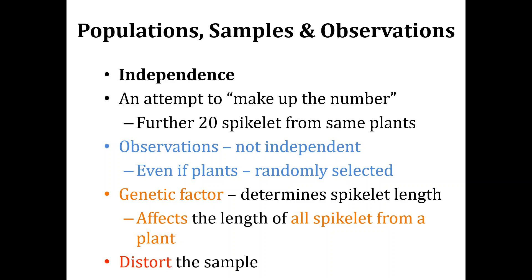This is not going to be independent sampling, and this is going to distort the sample, because in the sample from field two, there are at least 40 observations that are inherently linked to one another and present in pairs.